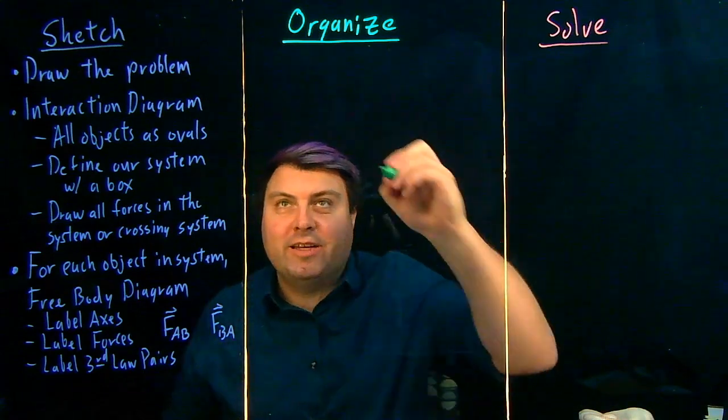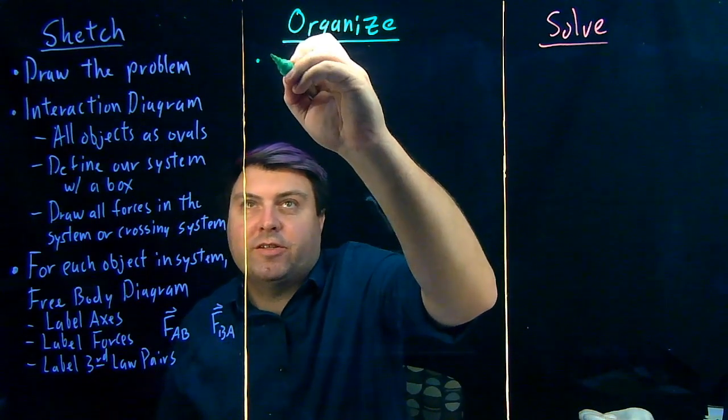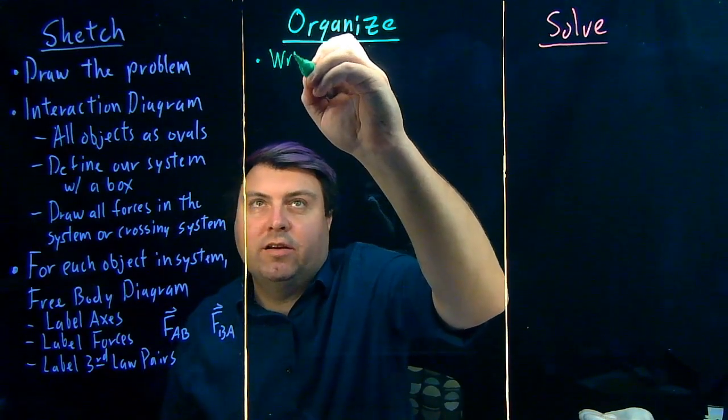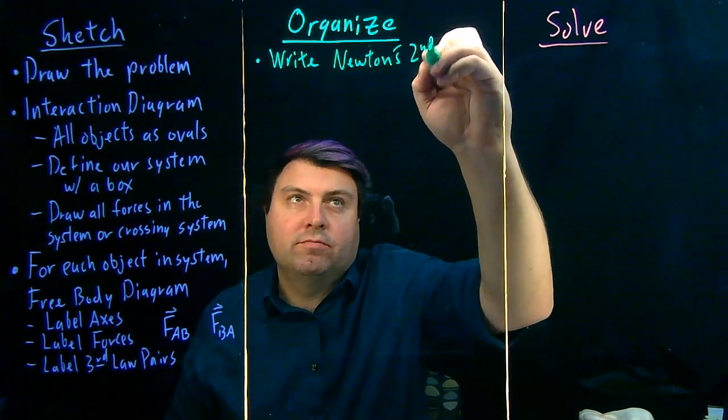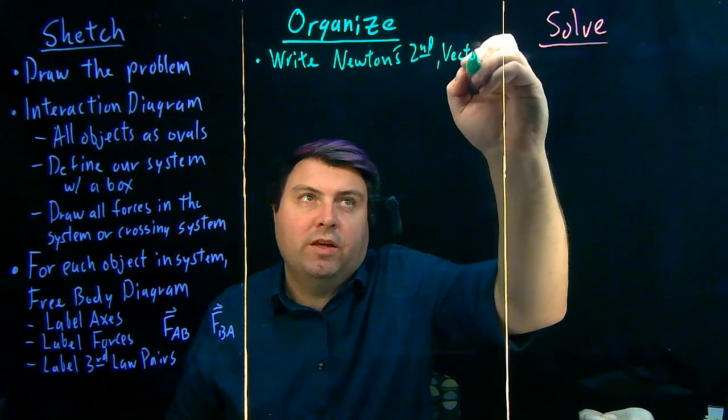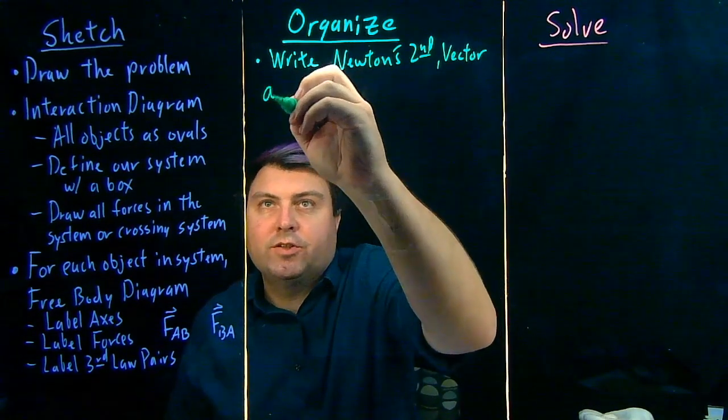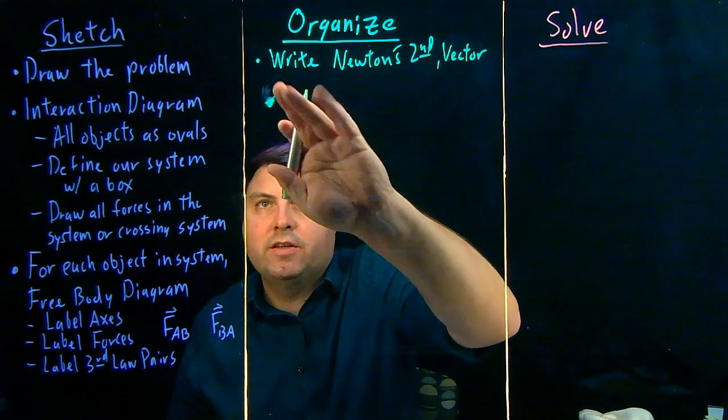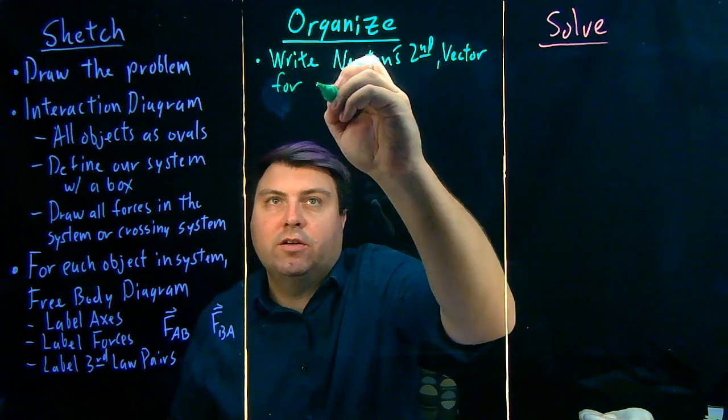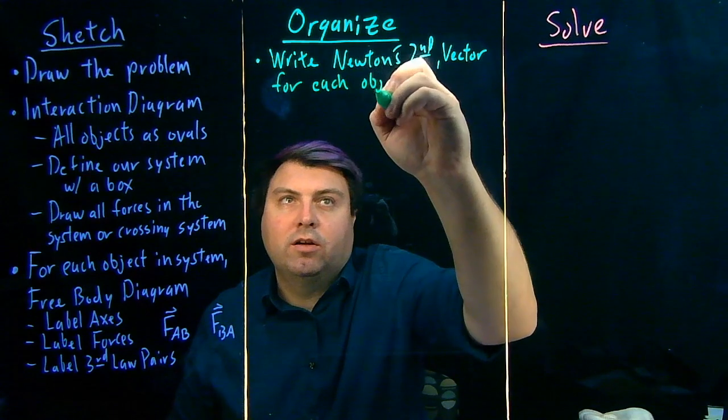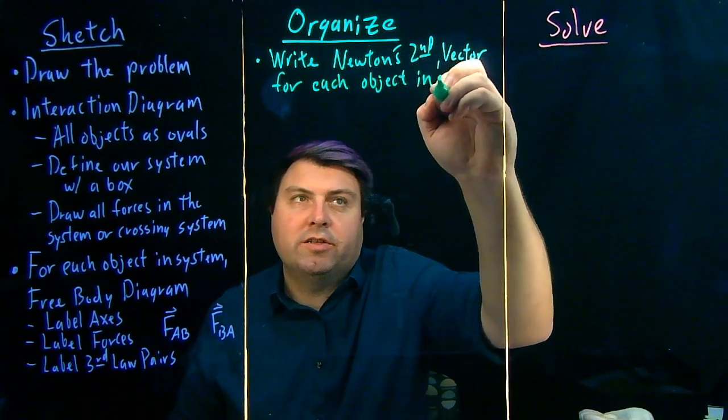So that's going to be a lot of help for us in our organize and solve step. In our organize step, we're always going to start by writing Newton's second law in vector form, and this is for each object in the system.